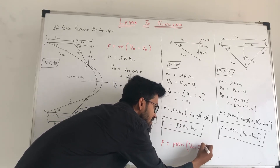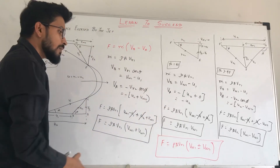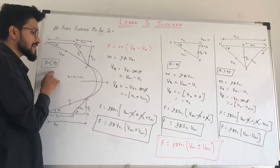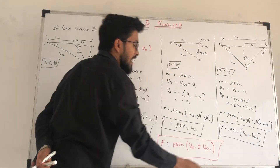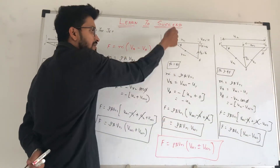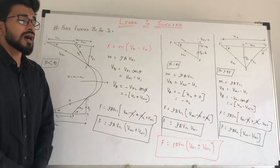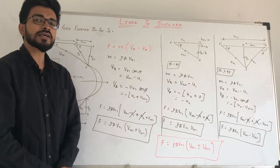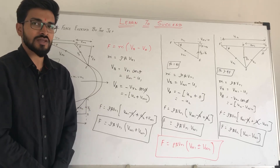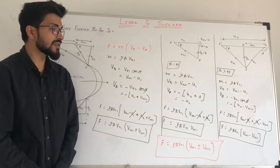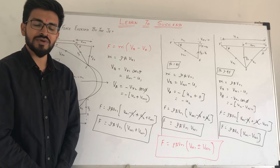So we have the generalized formula: it is plus or minus vw2. When beta is less than 90, the formula is F equals rho·a·vr1·(vw1 plus vw2). When beta is greater than 90, it is F equals rho·a·vr1·(vw1 minus vw2). And when beta is equal to 90, vw2 equals zero so the formula is just F equals rho·a·vr1·vw1. That is how we derive the force exerted by jet formula. If you like this video, please share with friends and subscribe to my channel. Thank you.